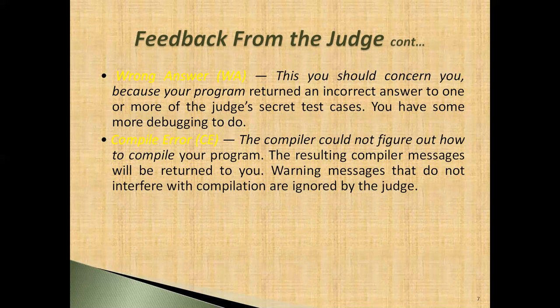Compiler Error: the judge could not compile your program, and the resulting compiler message will be returned to you. Warning messages that do not interfere with the program are ignored by the judge. This error can occur because of language mismatches — for example, if a site supports C and C++ but you submitted a Java program, you might get a compiler error.